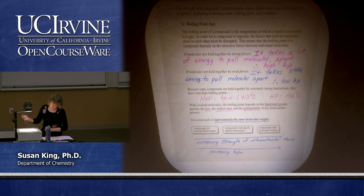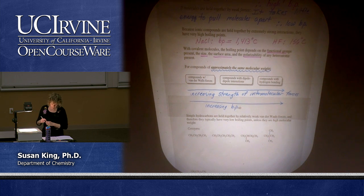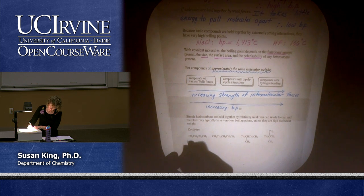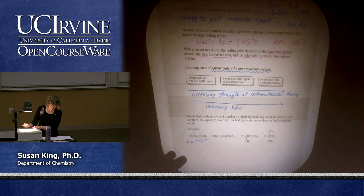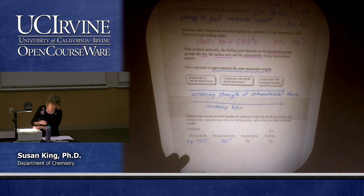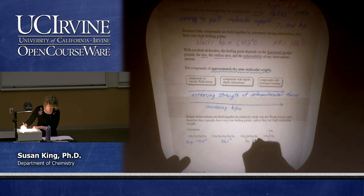Simple hydrocarbons are held together by relatively weak Van der Waals forces and therefore typically have very low boiling points. A four-carbon chain has a boiling point of -0.5°C. Adding a carbon jumps it up to 36.1°C. If we put in a branch — still five carbons but branched — the boiling point drops to 27.9°C. A double branch still with five carbons drops again to 9°C. This has to do with surface area.